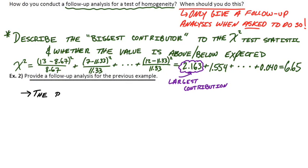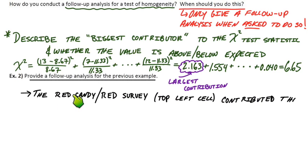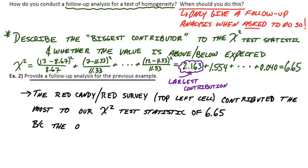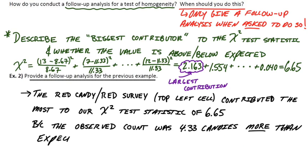Okay, so that 13 was in the top left cell, which is the red candy and red survey. People that chose the red candy after getting the red survey treatment. That actually contributed the most to our chi-square test statistic, which was 6.65. And why was that? Well, the observed count was 4.33 candies more than the expected count. How the heck did I get that number? The observed count was 4.33 candies more than the expected count. Well, if I just go back and look at the expected count here, 13 is way bigger than 8.67.